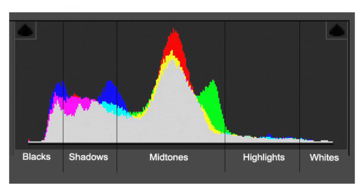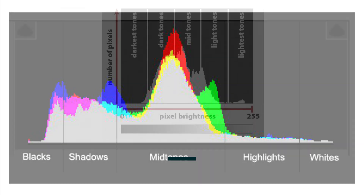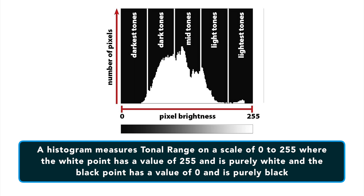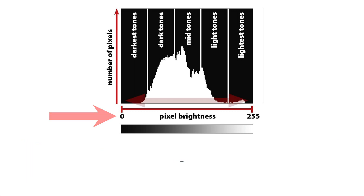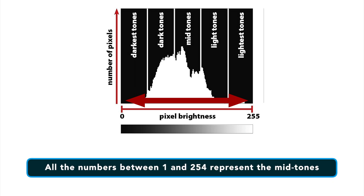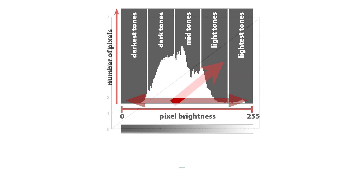The histogram gives us a really good idea about the tonal range of an image on a scale of 0 to 255. The white point, the point on the right-most side of the scale, has a value of 255 and is purely white. The black point, the point on the left-hand side of the scale, has a value of 0 and is purely black, as well as a number of points in between pure black and pure white that constitute the mid-tones — all the numbers between 1 and 254.